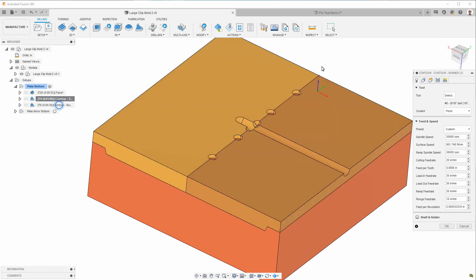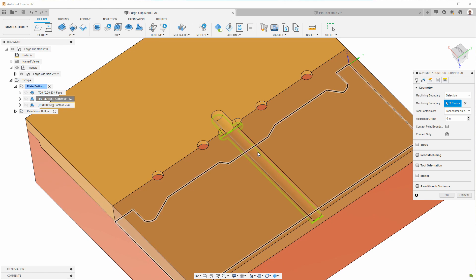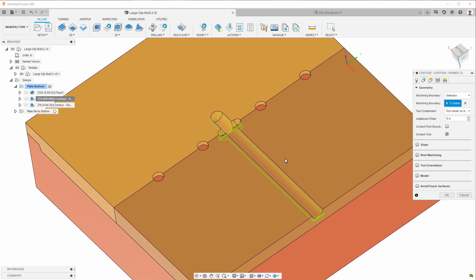Now for the contour, what I needed to do is to select two contours. As you can see here, we have two boundary selections. The reason I need two is because each of these selections can only be done on one solid model.